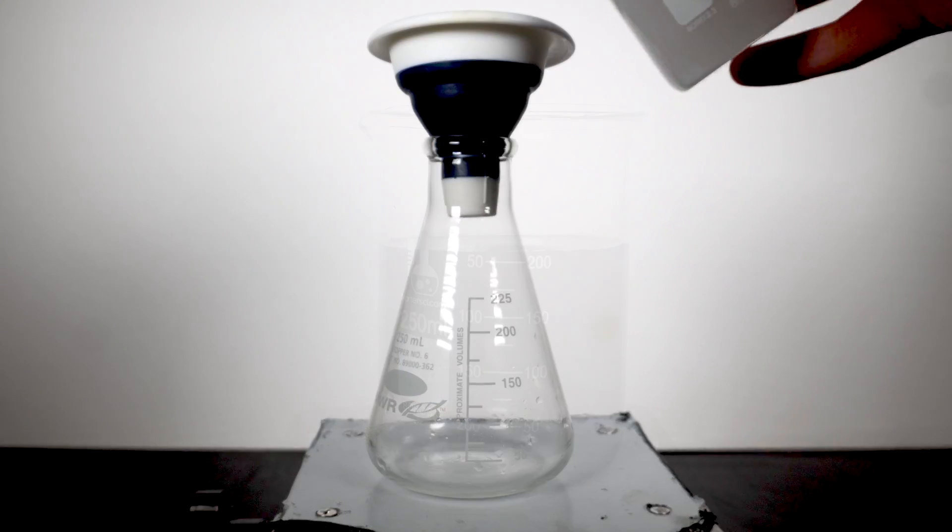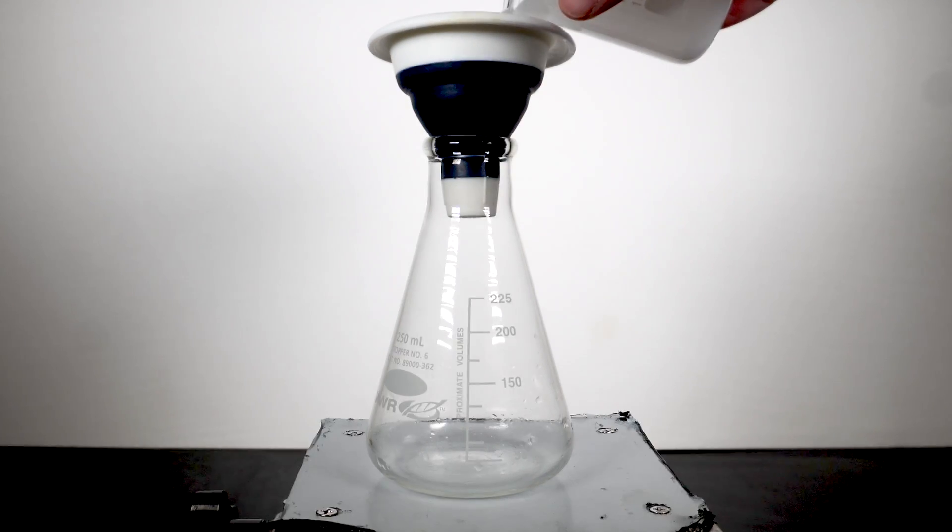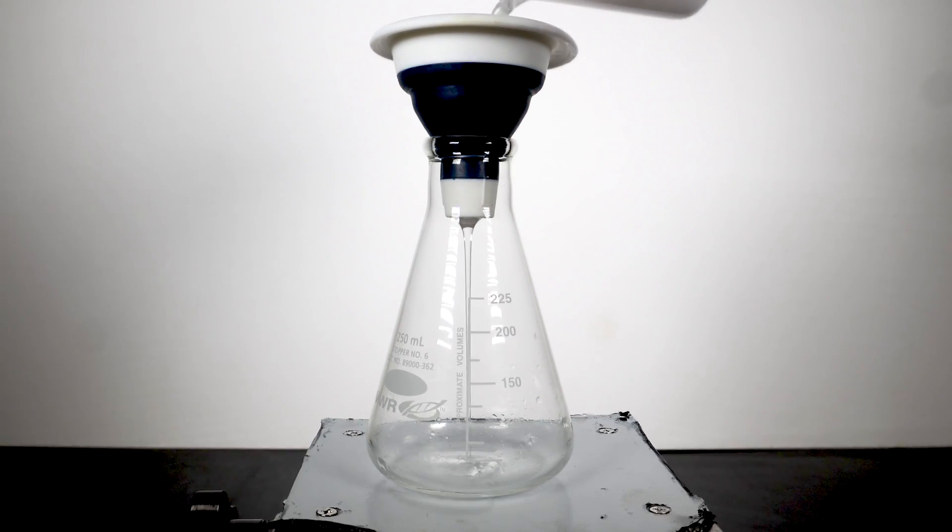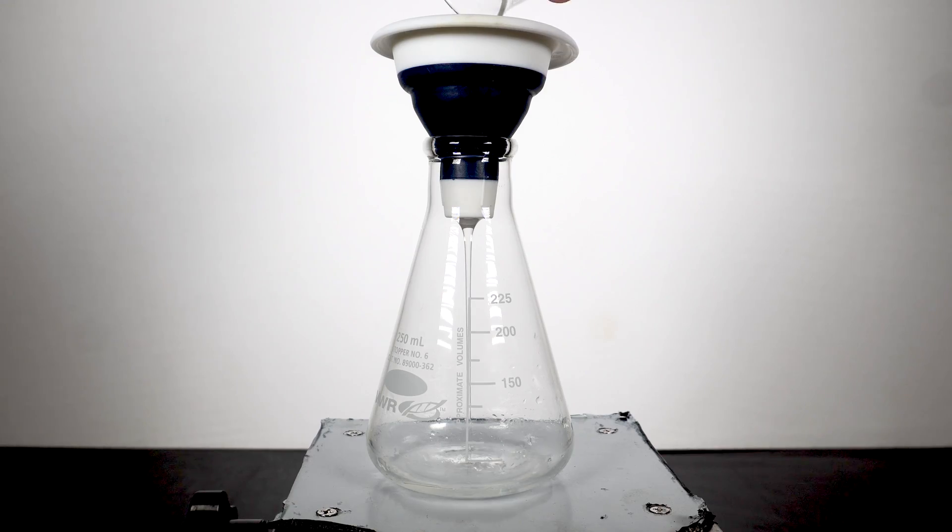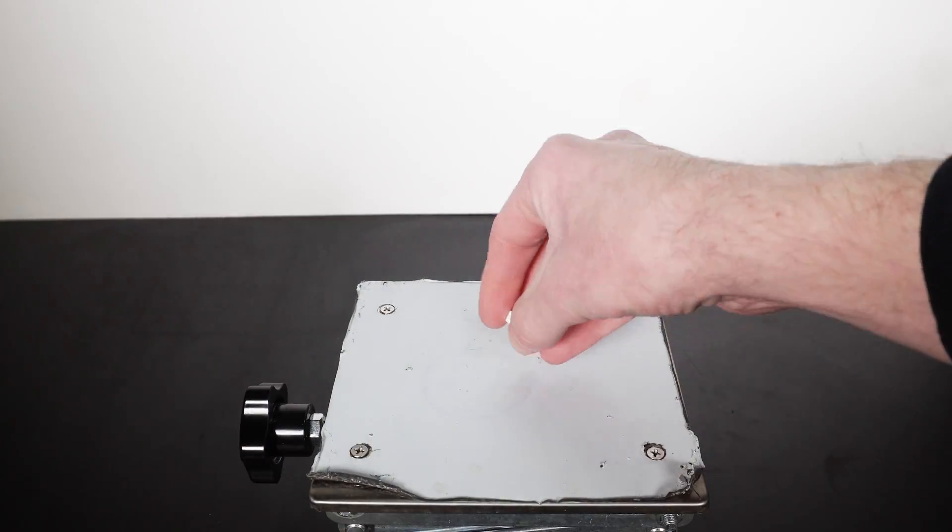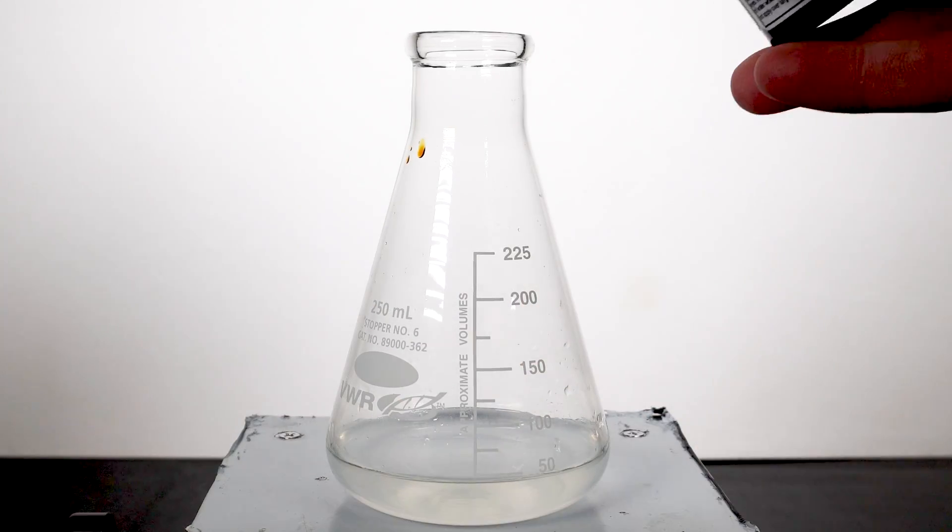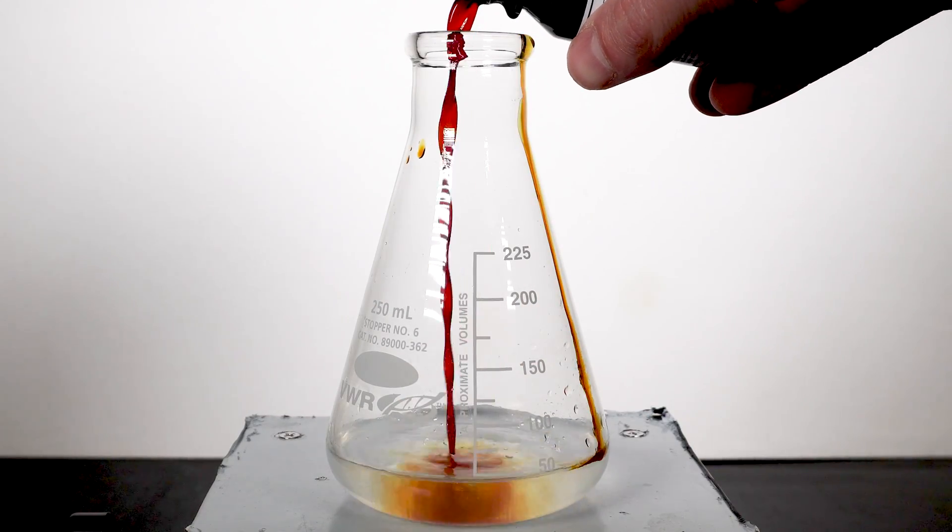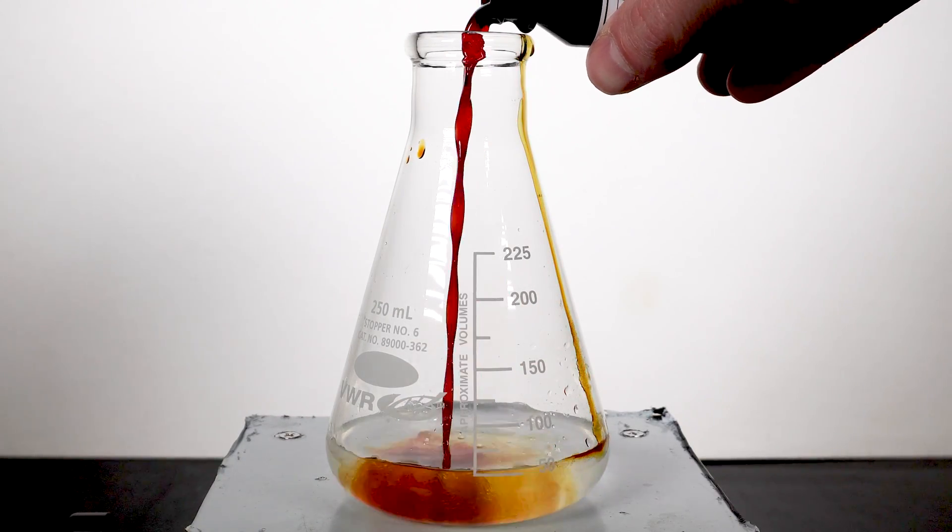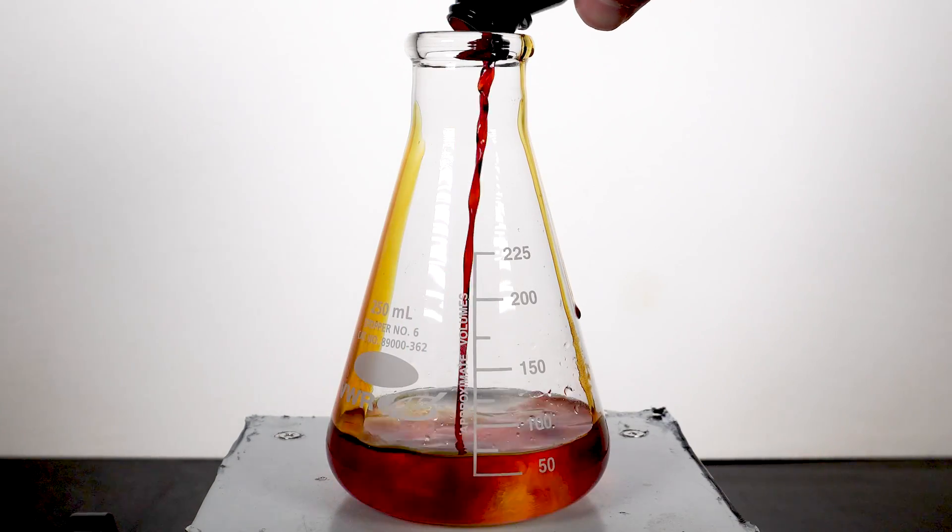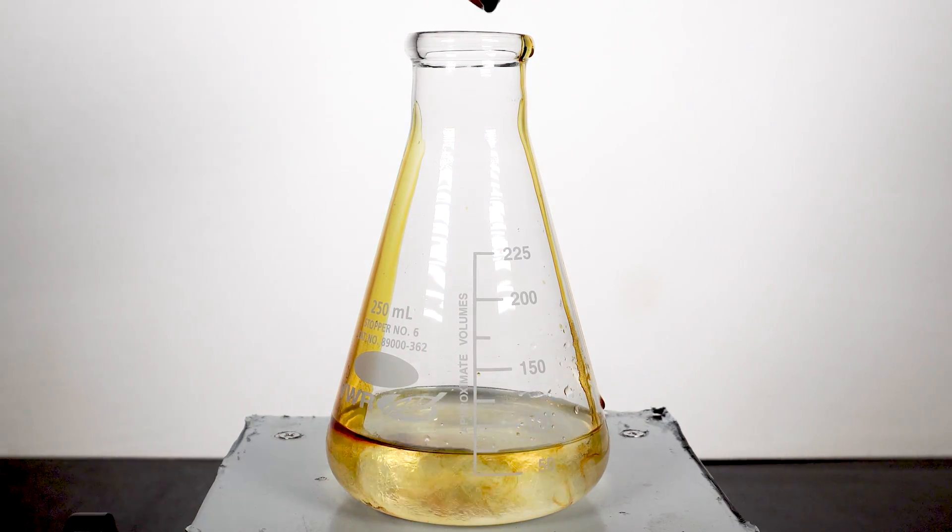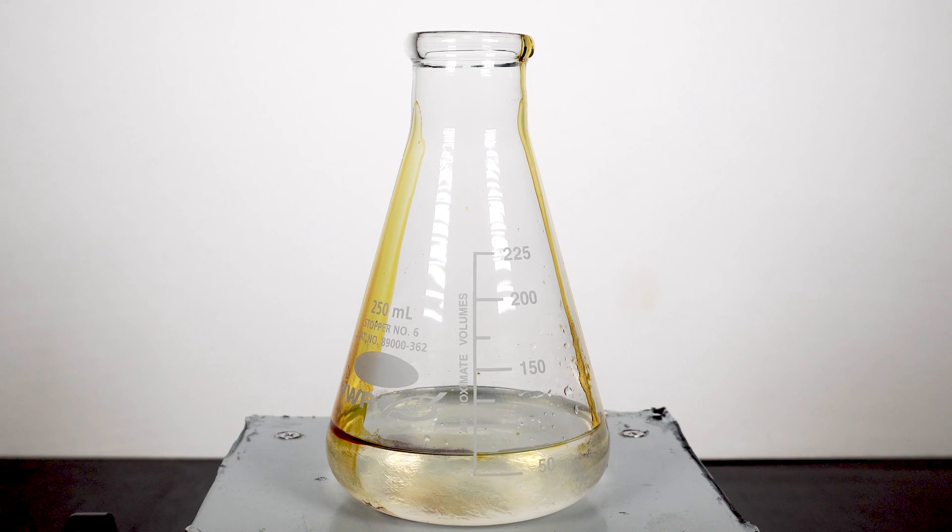The specific clock reaction I am after today is the iodine clock reaction. There are many different variations of this reaction, though most commonly seen is performed with vitamin C, though almost all variations use hydrogen peroxide and starch. Further explanation of how this reaction works will be given later in the video, but first, let's get into making the solutions and perform the clock reaction.